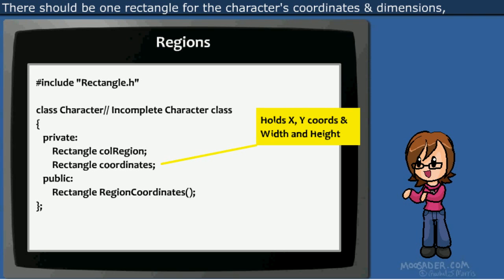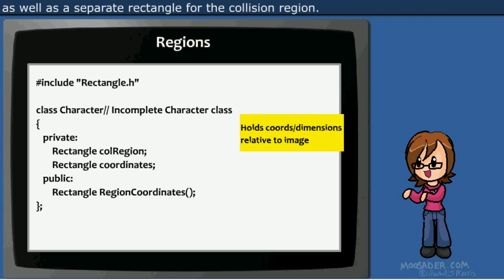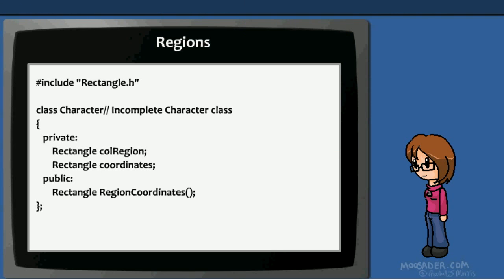There should be one rectangle for the character's coordinates and dimensions, as well as a separate rectangle for the collision region.